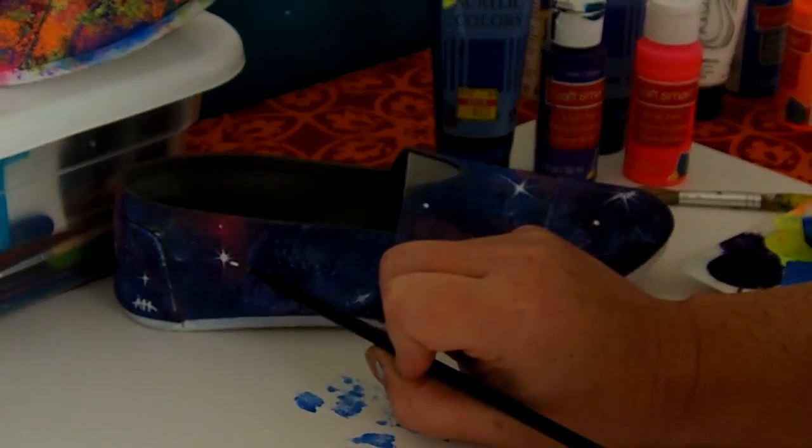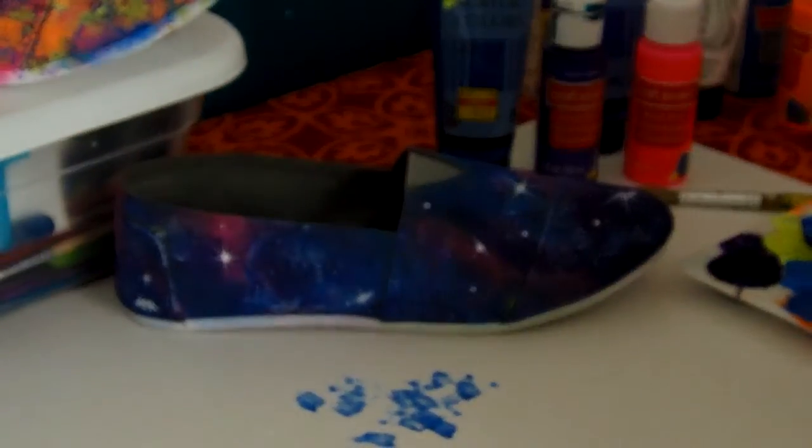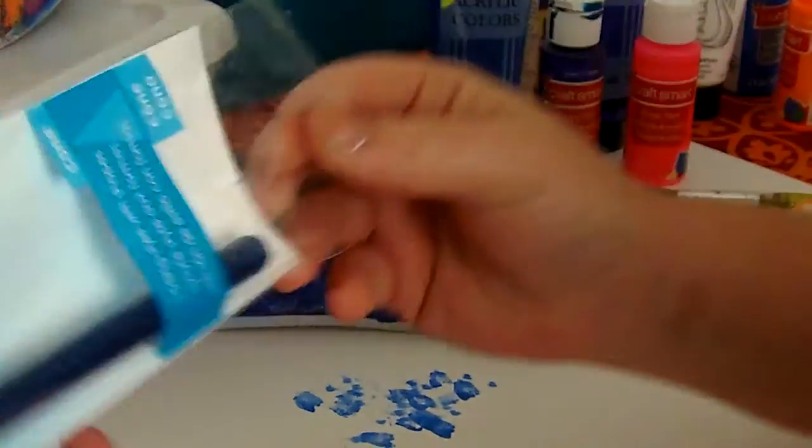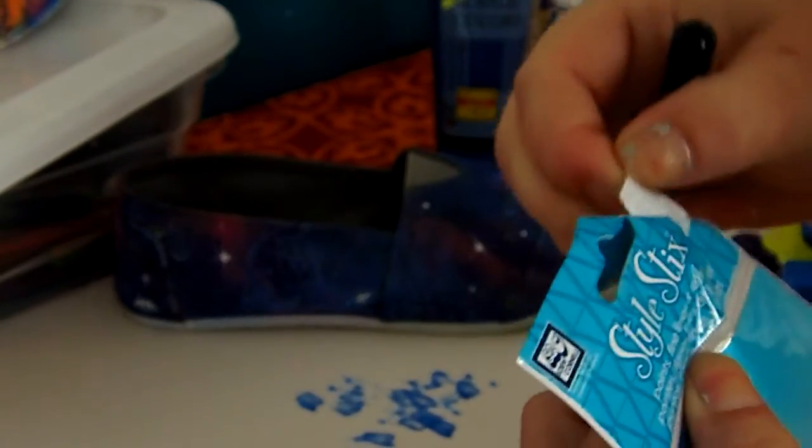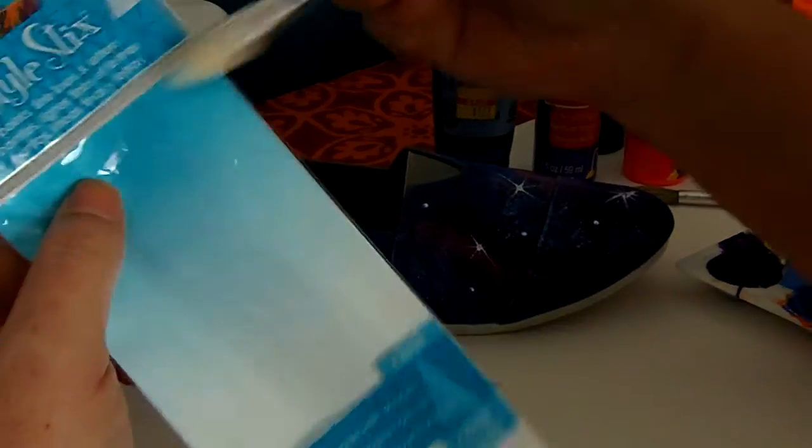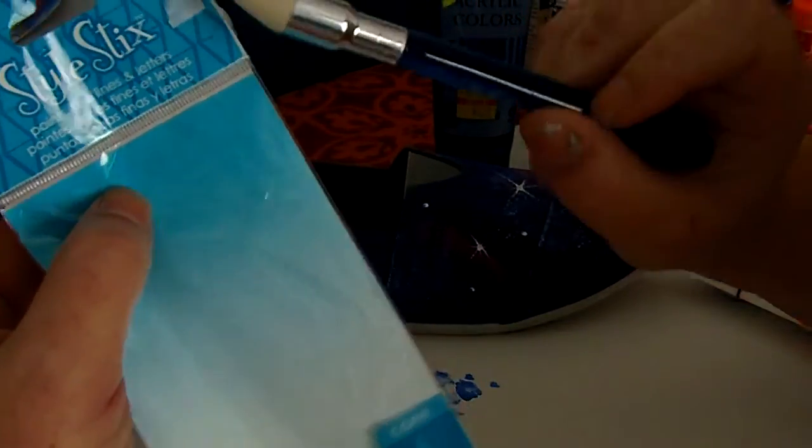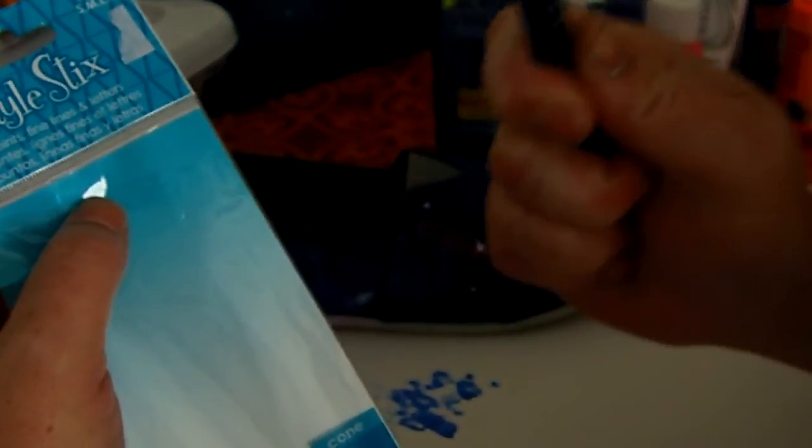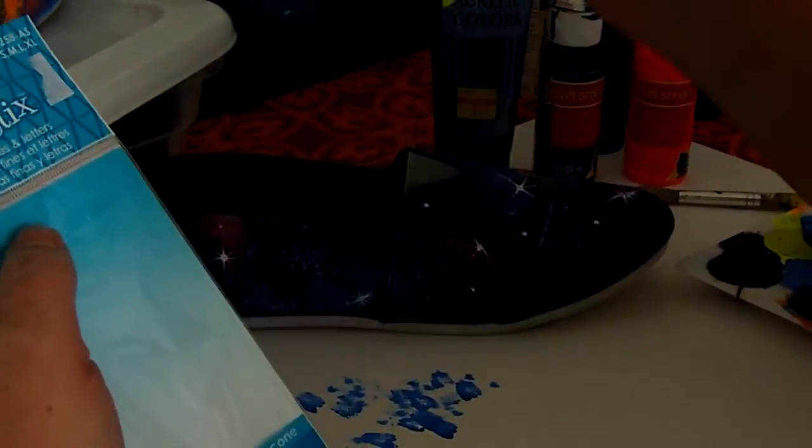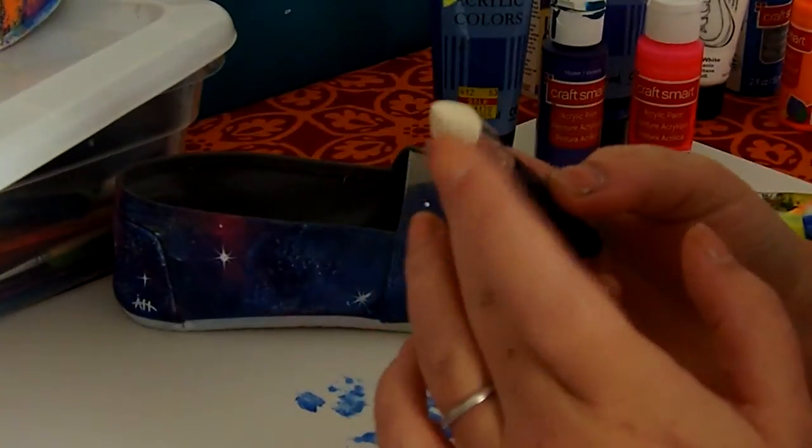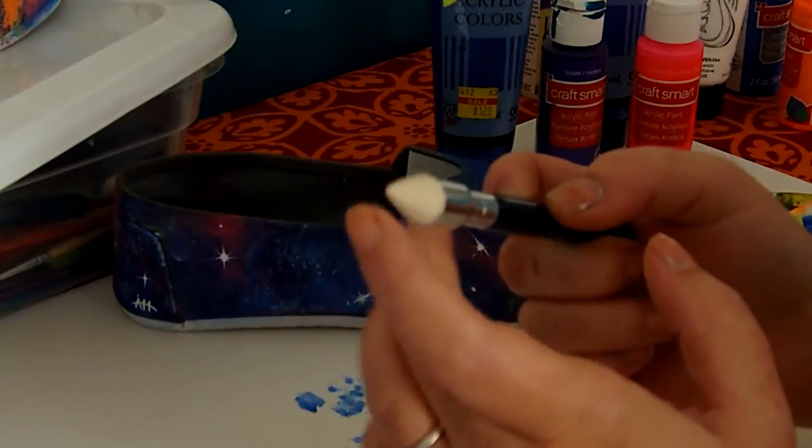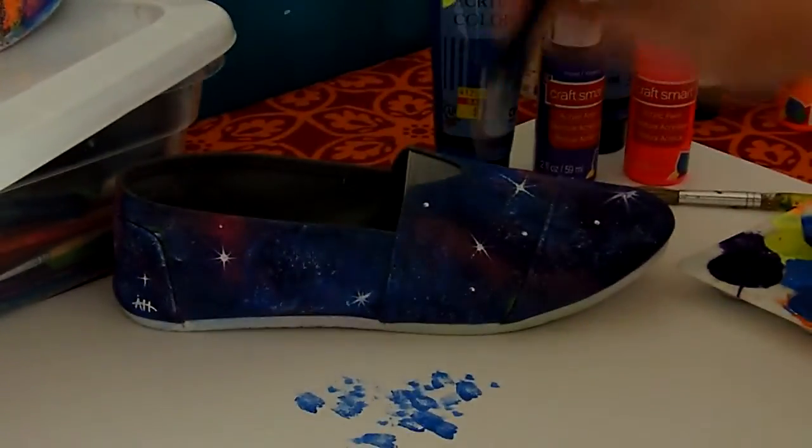And then what I did for the non-glowing stars—these are style sticks and I got them at Hobby Lobby. They're great for points, fine lines, and letters, shading. And they're great for these dots. I just dipped just the tip of my style stick in the paint and just came in and dotted all around.